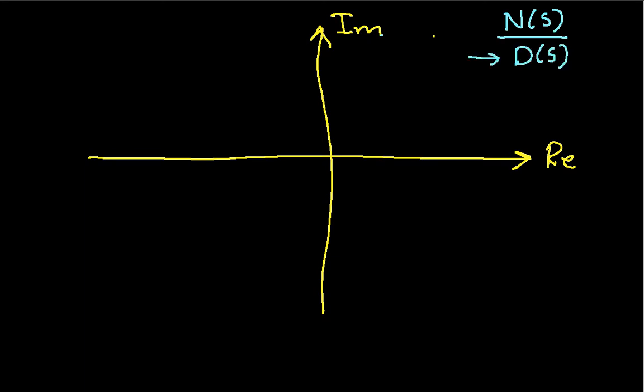A root of the denominator polynomial tells us about what sorts of things show up in the partial fraction expansion of this n of s over d of s, which in turn tells us what the time functions that we're going to get look like.